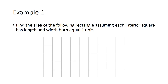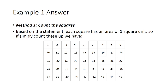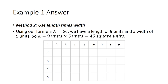Example one: find the area of the following rectangle, assuming each interior square has a length and width of one unit. We can count the squares — counting them up gives 45. Since each square has an area of one square unit, the total is 45 square units. Using the formula: length of 9 units times width of 5 units equals 45 square units.